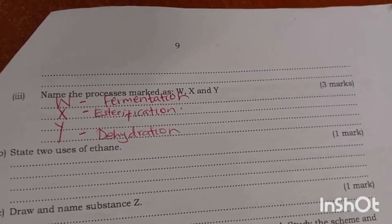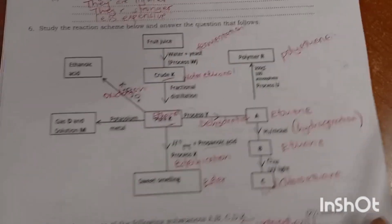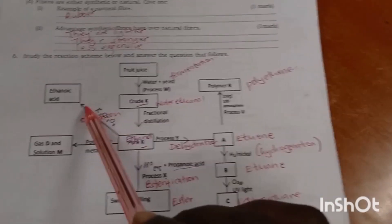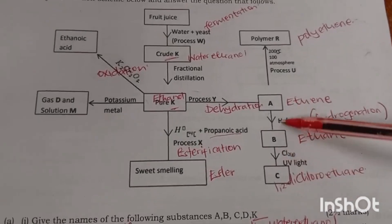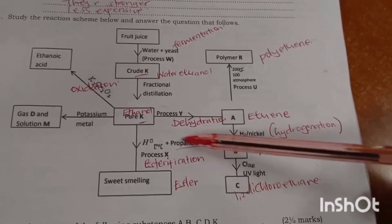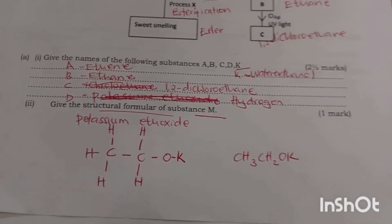Name the processes marked W, X and Y. Study the scheme — starting with ethanol from fruit juice or crude oil. You oxidize ethanol to get ethanoic acid; dehydrate to get ethene; then using nickel catalyst get ethane; then you get dichloroethane. The first process is fermentation.